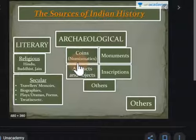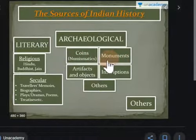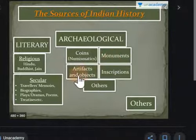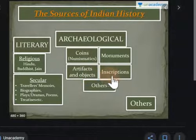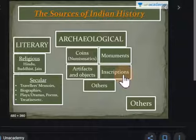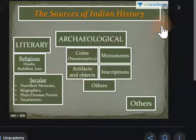Under archaeological sources, we have coins. The study of coins is called numismatics. Coins have accurate dates on them, and often the image of the king or queen of that time is printed on the coins. Monuments are ancient buildings and structures. Artifacts and objects are ancient items — these are called artifacts. Inscriptions are things carved or engraved on walls and stones — those are called inscriptions. There are also other sources that we will discuss.